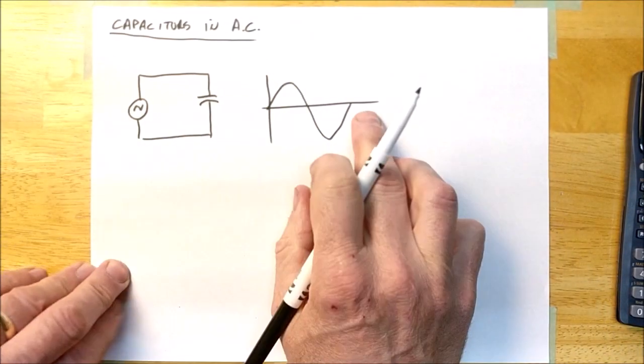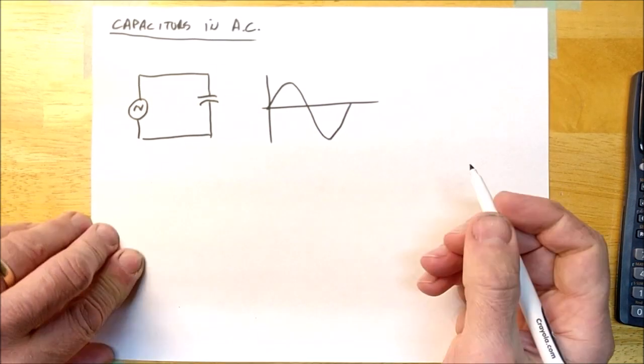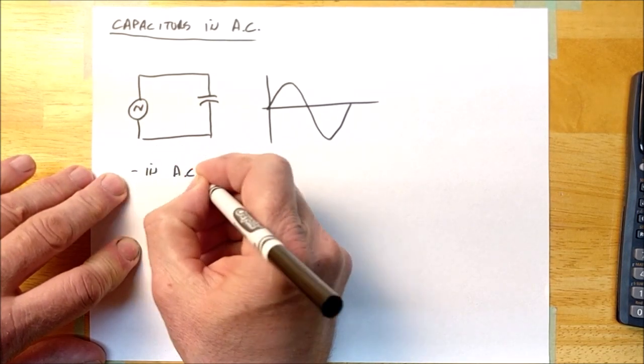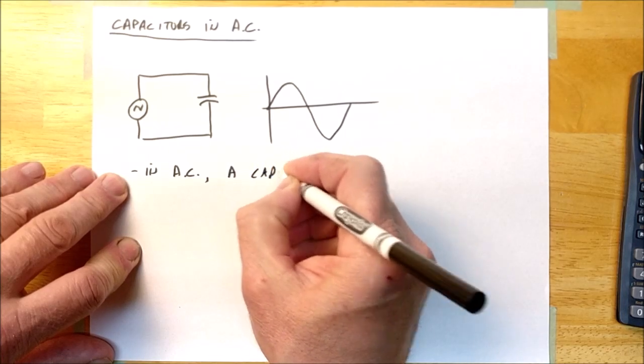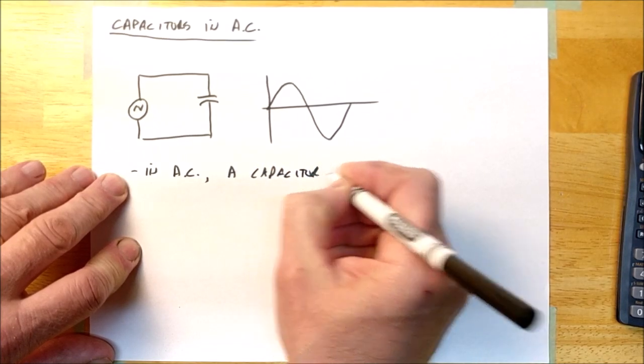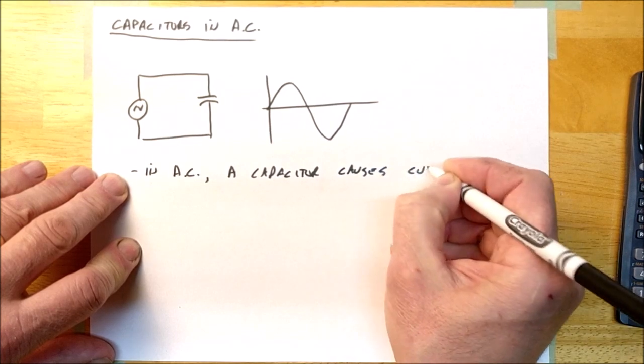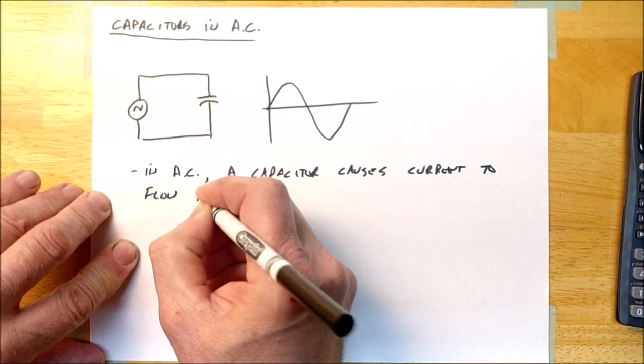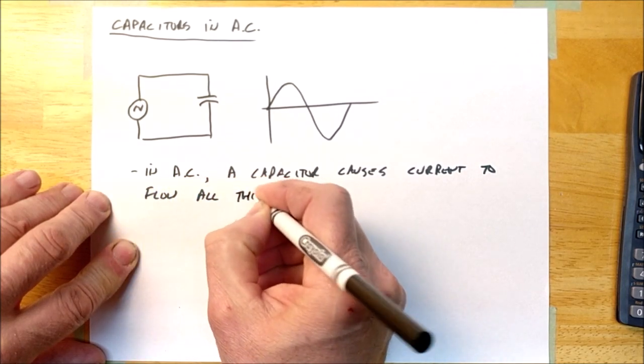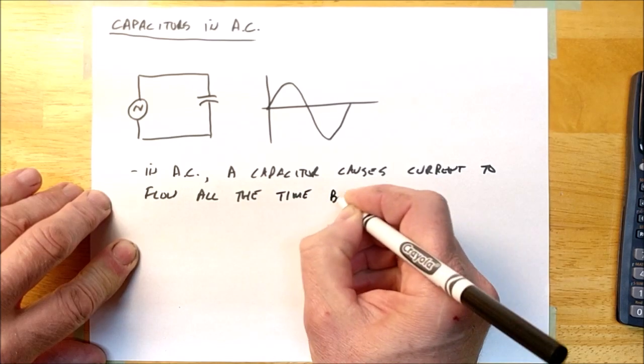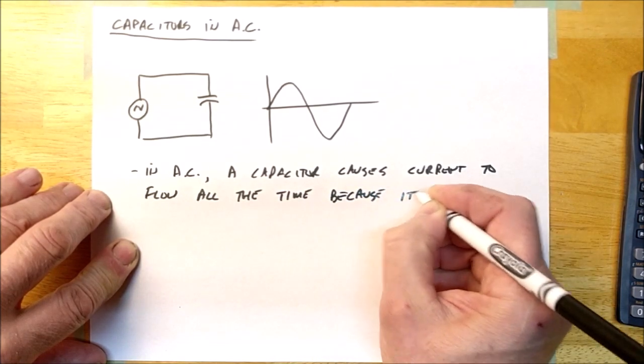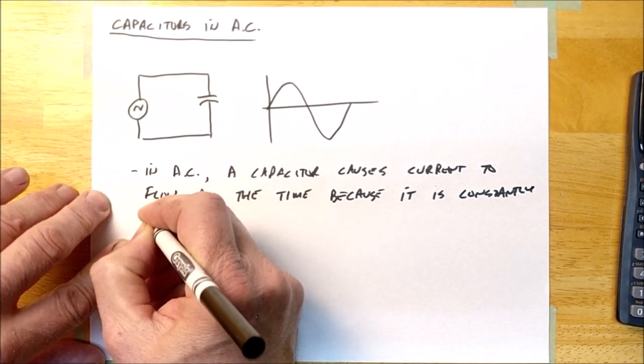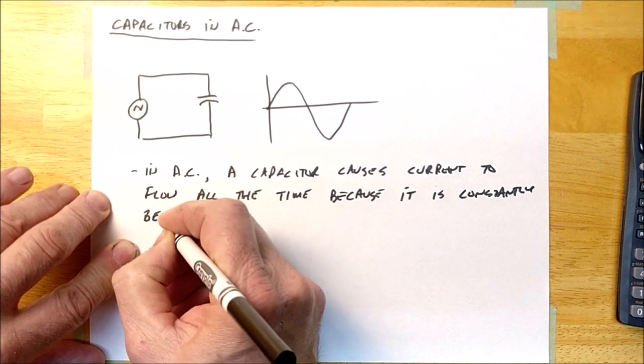And this thing is going to cause current to flow all the time because the voltage is constantly charging and discharging the capacitor. So I'm going to write that as a note. In AC, a capacitor causes current to flow all the time because it is constantly being discharged and being charged and discharged.